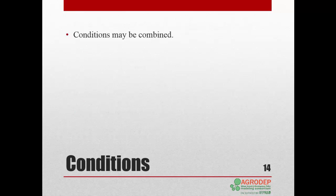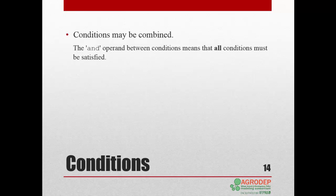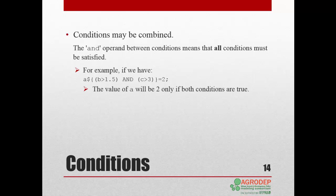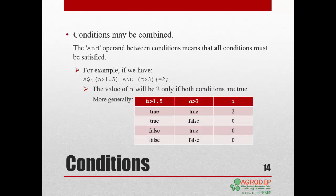You can combine conditions using the AND operand between conditions. This means that all conditions linked by AND must be satisfied. For example, in the following expression both conditions — B greater than 1.5 and C greater than 3 — must be satisfied for A to be equal to 2. More generally, we can build a conditional table for the possible combinations; only one instance gives the result 2.